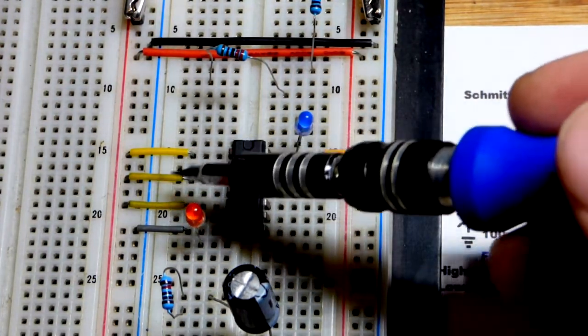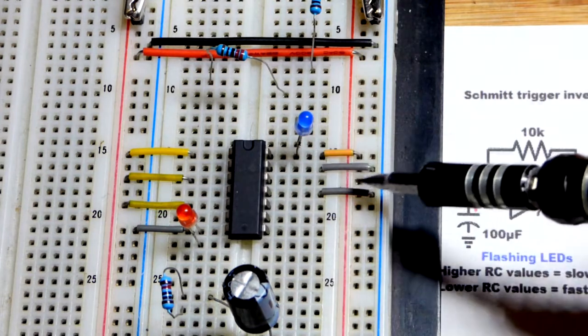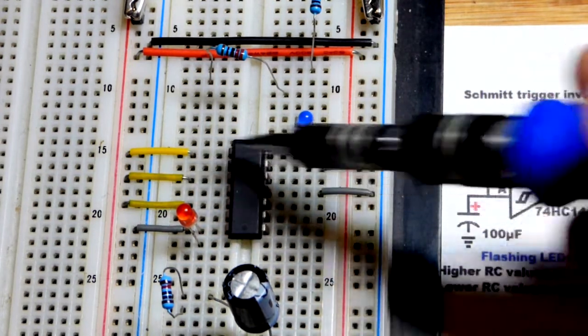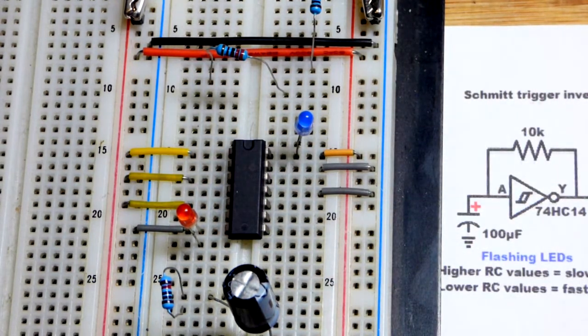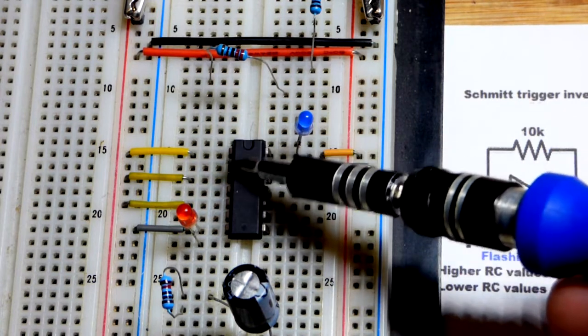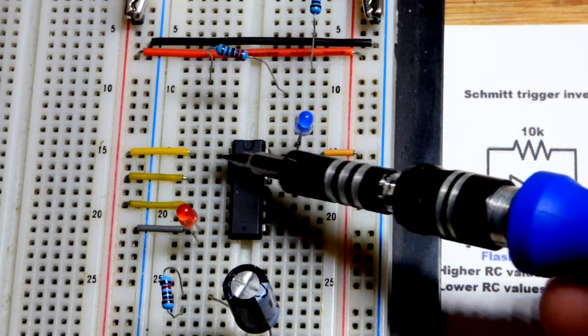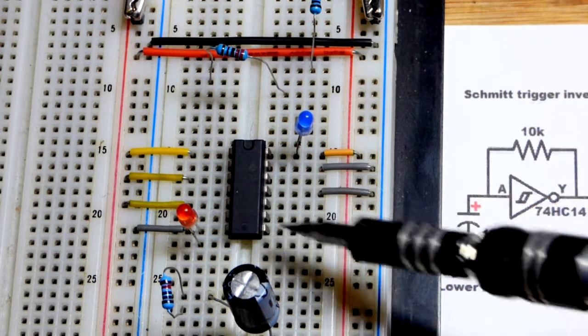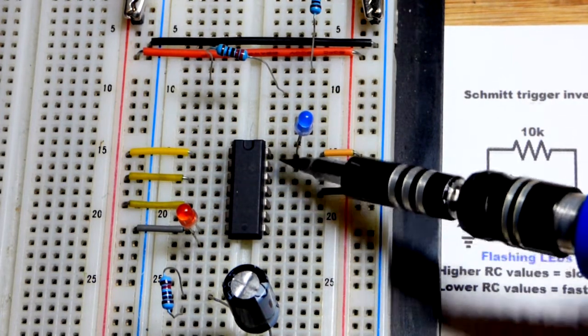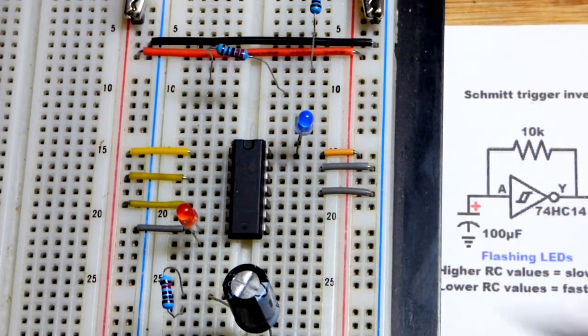And you'll notice directly to the power rail, we have these other jumpers. Those are the inputs for the inverters we are not using. So they're the inputs. Right below them are the outputs for that particular inverter. So that's one, two, three. We're using four. And then that's five, six right there. The outputs can stay floating. That is no problem.